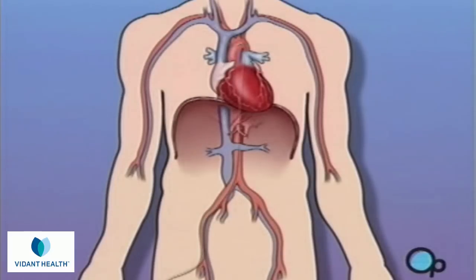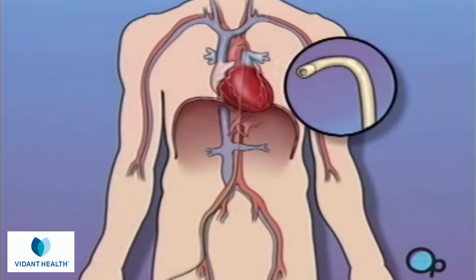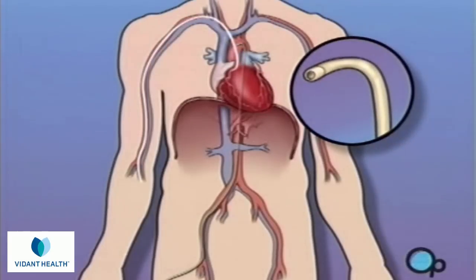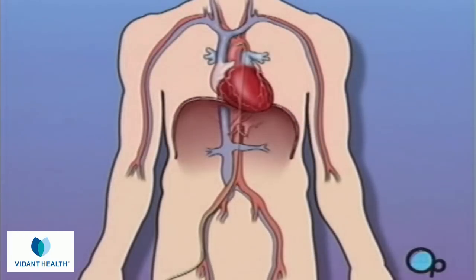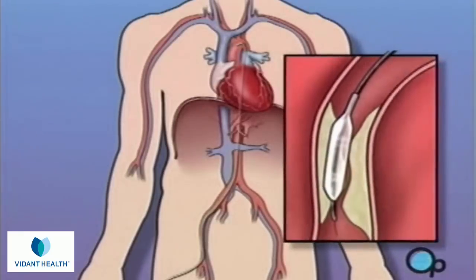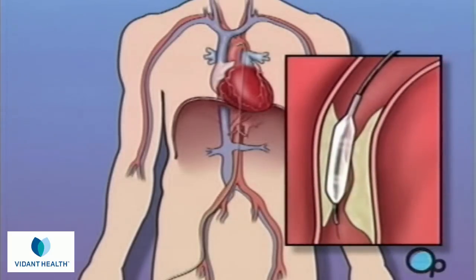During a balloon angioplasty, a heart specialist will insert a thin tube into the artery in your arm or leg and gently guide it towards the problem area in your heart. Once the tube is in place, a small balloon is briefly inflated in order to widen the narrowed artery.